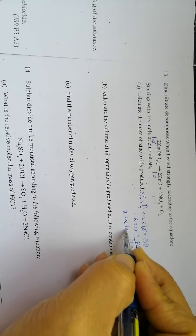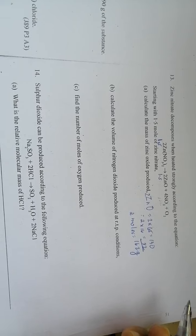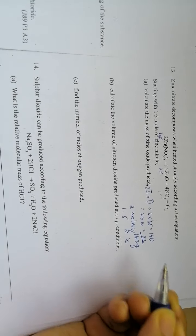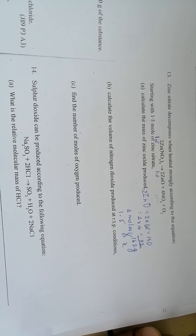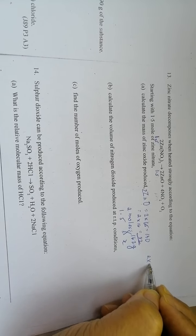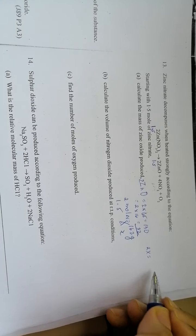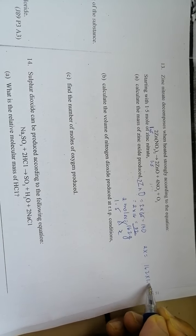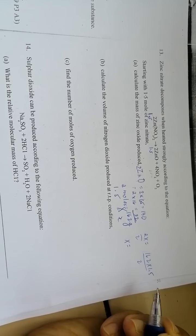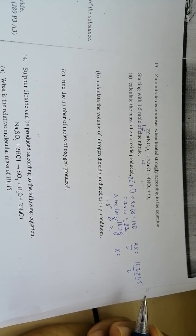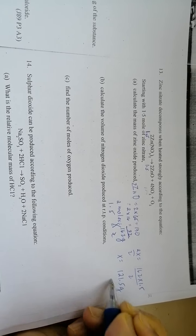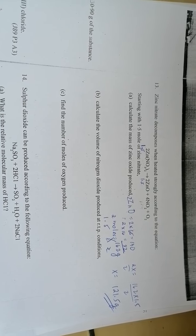So 2 moles equals 162 grams. How about 1.5 moles? We cross multiply. 2 times X equals 162 times 1.5. Divide both by 2, so the mass of zinc oxide produced if 1.5 moles is used will be 121.5 grams. That's our final answer.